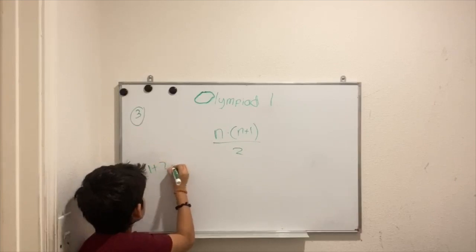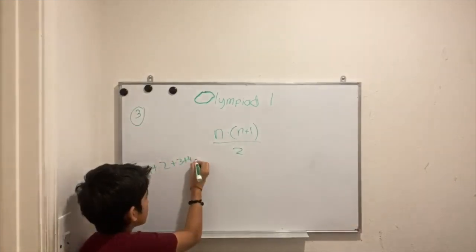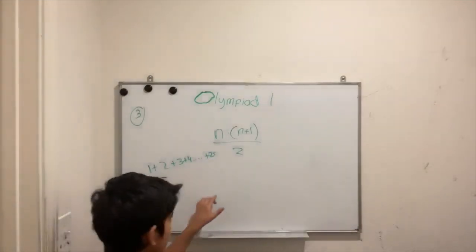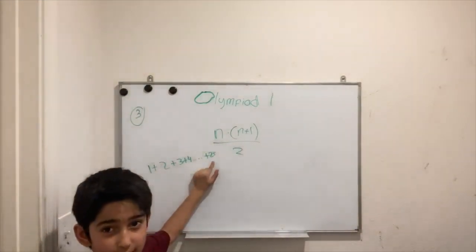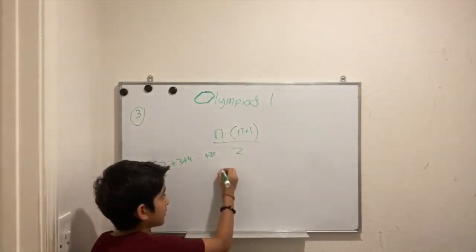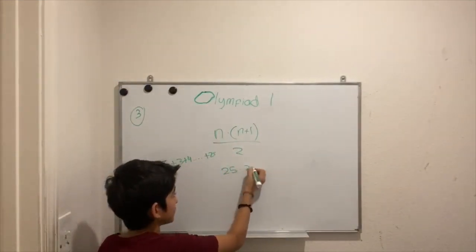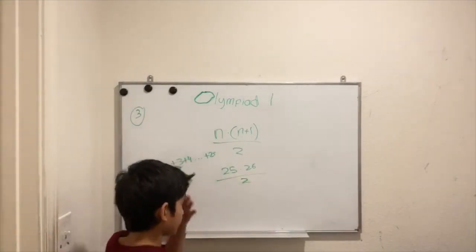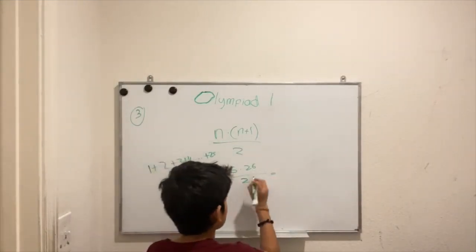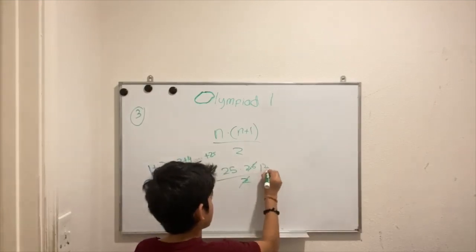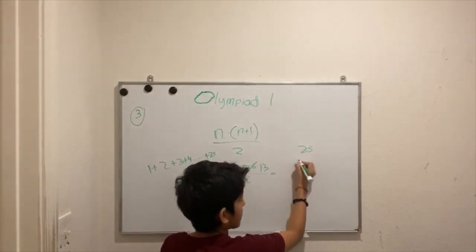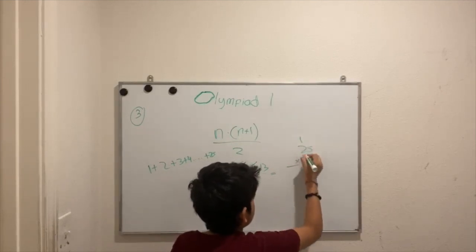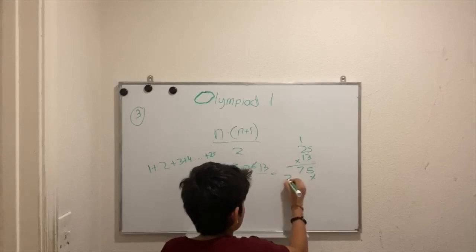Let's write down the problem: 1 plus 2 plus 3 plus 4 all the way to 25. Since 25 is the last number in the sequence, we use that as n. So it's 25 times 26 divided by 2, which equals 13 times 25, which equals 325.